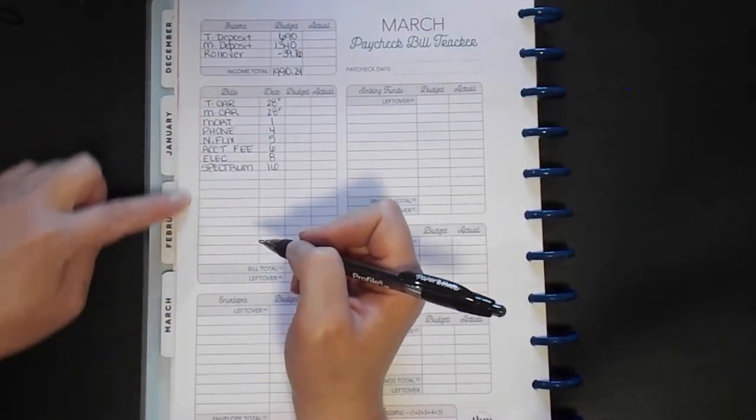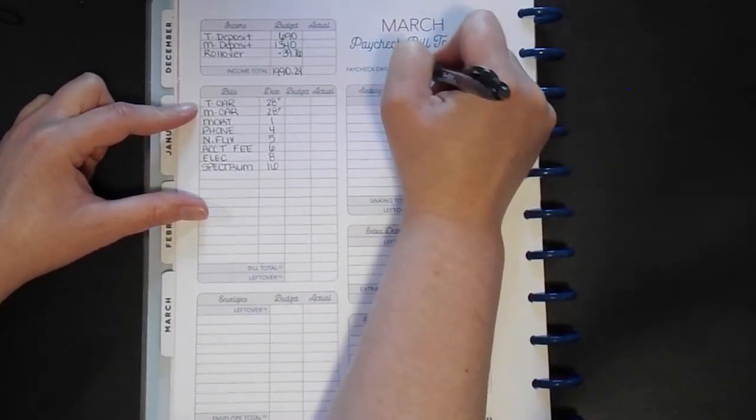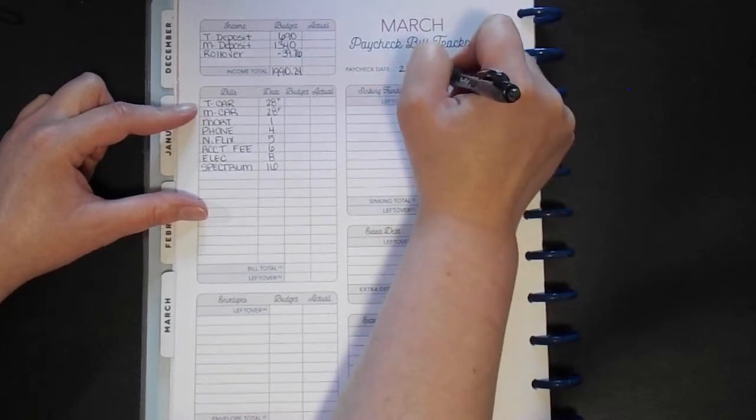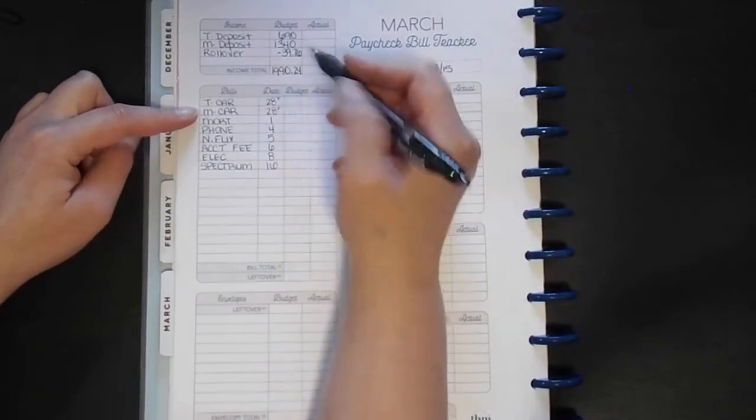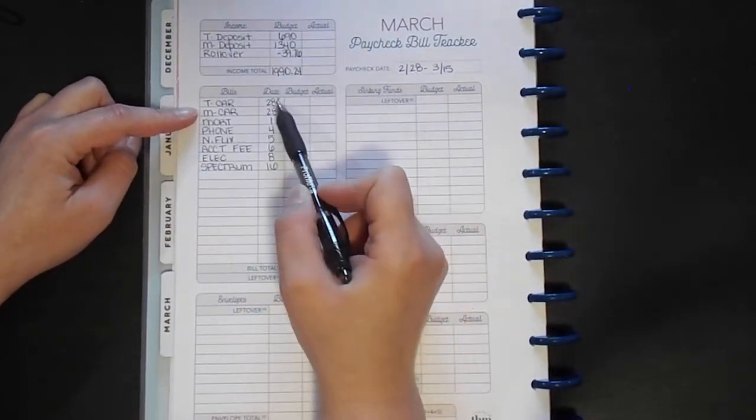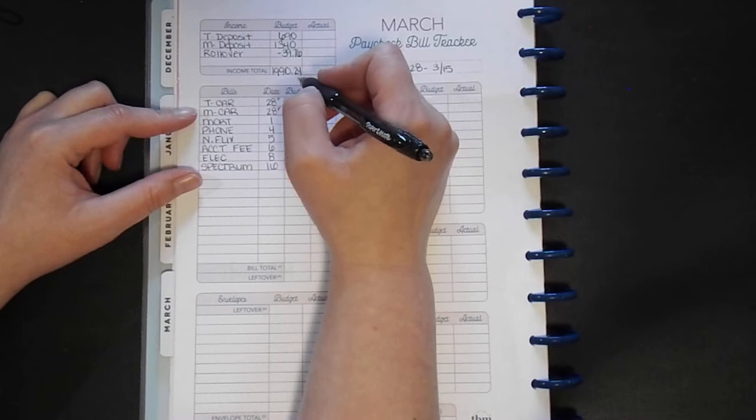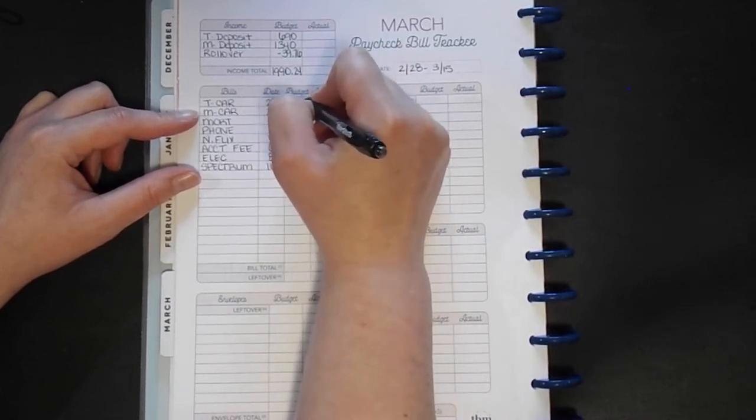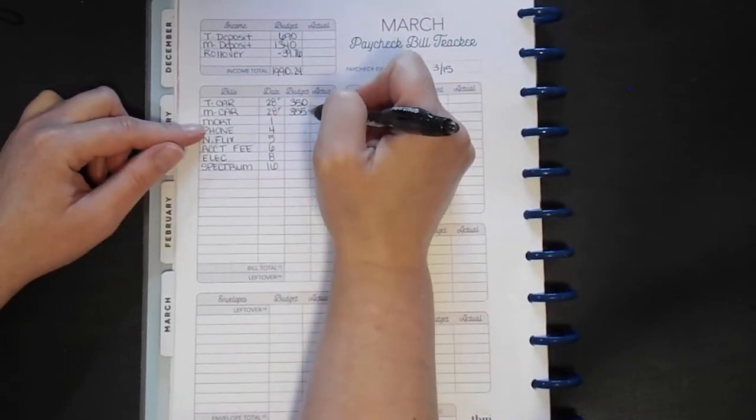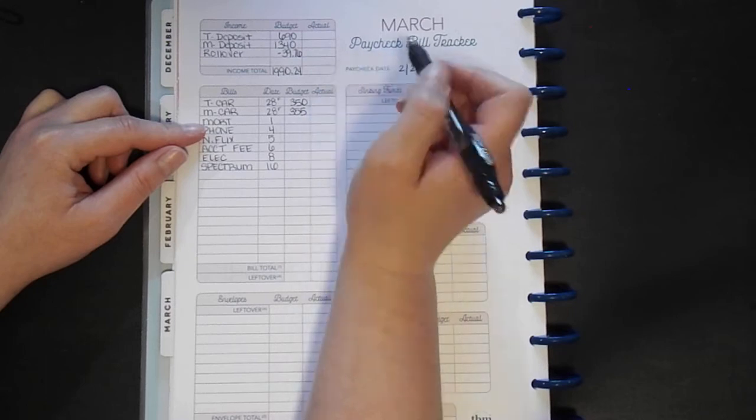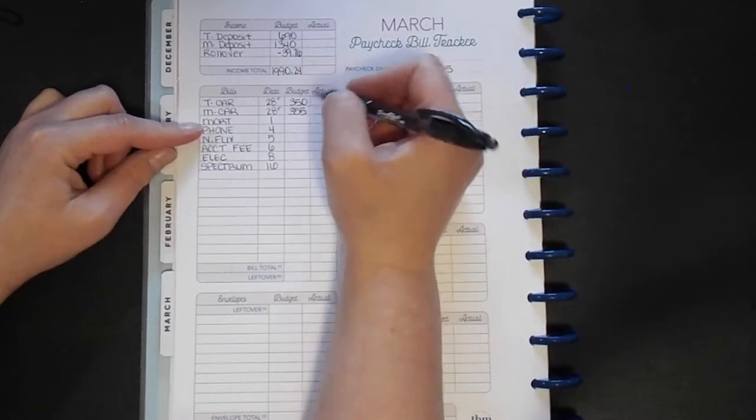And I wrote down the bills that have to come out of this paycheck for the dates 2-28 through 3-15. My husband's car payment, if you look right here, it's actually on the 28th of February. That's why there's an F right there, just to remind me that it was the previous month. His amount was $350 and mine is $355. That's not our actual payment. When we started paying for our cars, we started adding a little bit extra, just like $10 extra a piece, but it's helping.